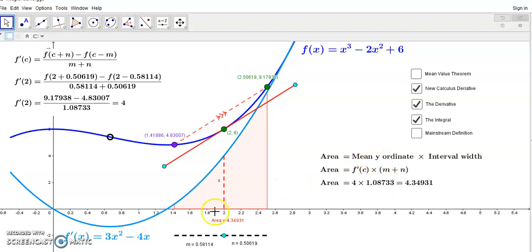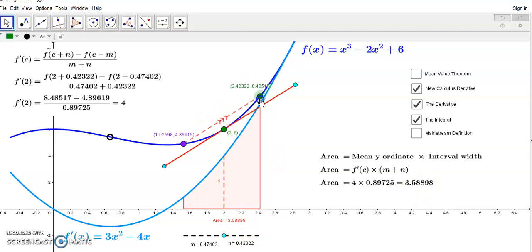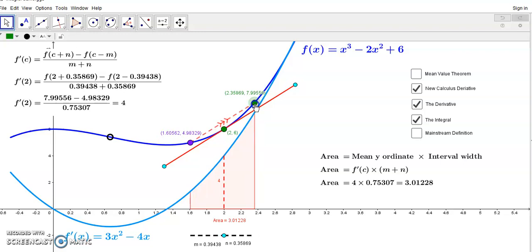The arithmetic mean is this value of 4, and the interval width, which is m plus n, gives us an area, which is 4.34 whatever. And as you see here, this area here is the same as this area, and it doesn't matter how we move the secant line.